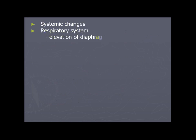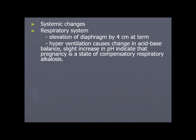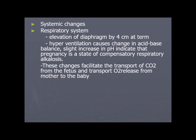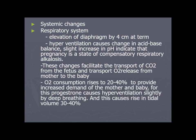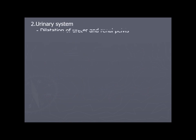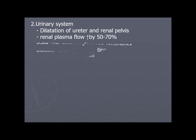Respiratory system: elevation of the diaphragm by 4 cm causes hypoventilation, changing acid-base balance. There is a slight increase in pH, indicating pregnancy is a state of compensatory respiratory alkalosis. These changes facilitate transport of carbon dioxide from the fetus and oxygen release from the mother to the baby. Oxygen consumption rises 20–40% to meet increased maternal and fetal demands. Progesterone causes hyperventilation by deep breathing, raising tidal volume by 30–40%.